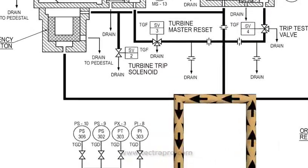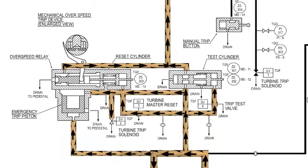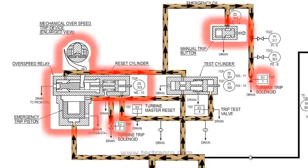Emergency oil leads to a trip by either the mechanical overspeed trip device, a manual trip, or a solenoid-activated trip.